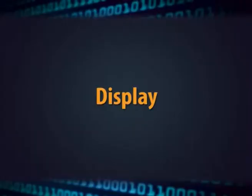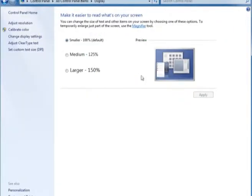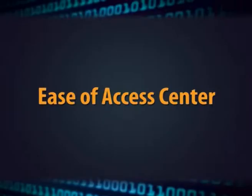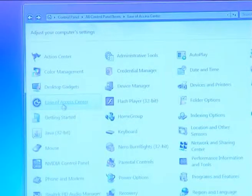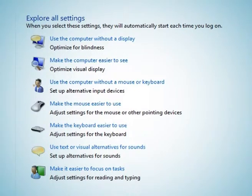The next option is display. If you want to adjust your display resolution and brightness, you can use the display option. The next option is ease of access center. There are several options like make the computer easier to see, make the mouse and keyboard easier to use, make it easier to focus on reading and typing tasks, and use the computer without a display. By using the ease of access option, you can make your system easy to use.